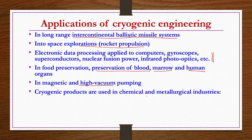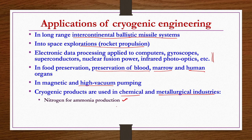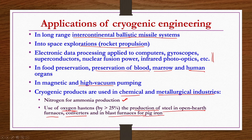For example, nitrogen is used for ammonia production. The use of low purity oxygen in the production of steel in open hearth furnaces, converters, and in blast furnaces for pig iron increases production by more than 25 percent.